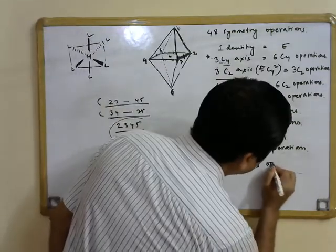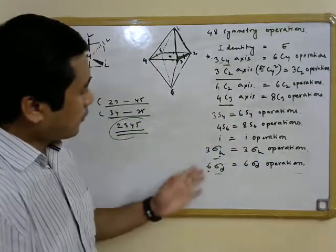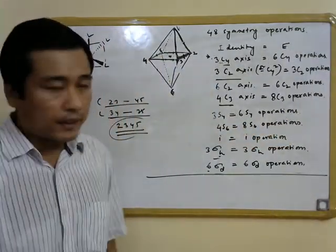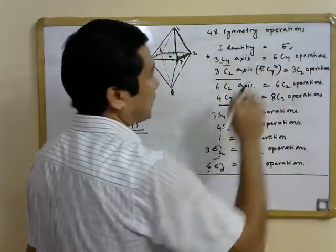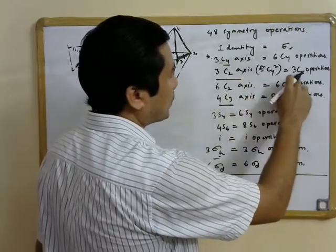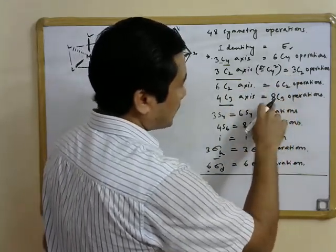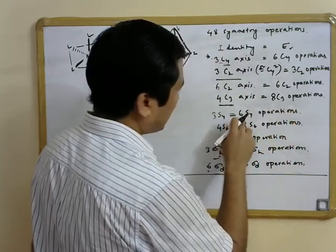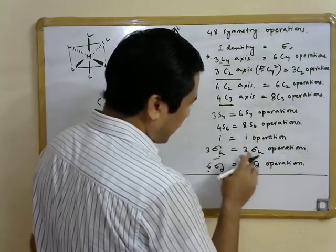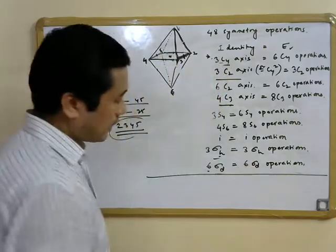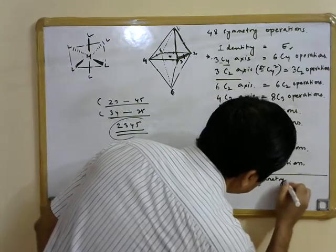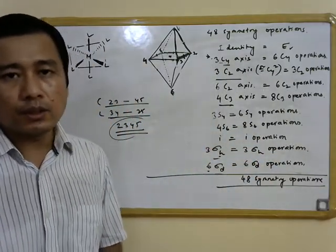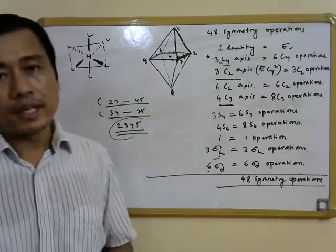We have now identified all planes of symmetry. Let us count the total symmetry operations: 1 identity + 6 C4 + 3 C2 (collinear to C4) + 6 C2 (bisecting equatorial planes) + 8 C3 + 6 S4 + 8 S6 + 1 inversion + 3 sigma_h + 6 sigma_d = 48 symmetry operations. We have successfully identified all 48 symmetry operations of the octahedron.